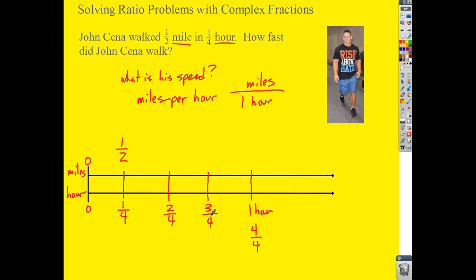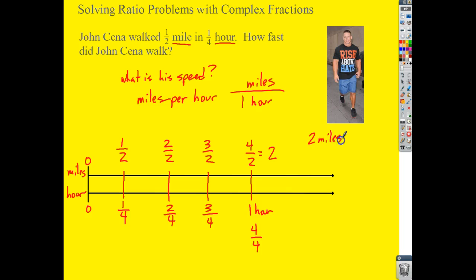I can just keep going by one-half: one-half, two-halves, three-halves, four-halves. So in one hour he travels four-halves of a mile. Four-halves is two, so in one hour he travels two miles. His speed is two miles per hour.